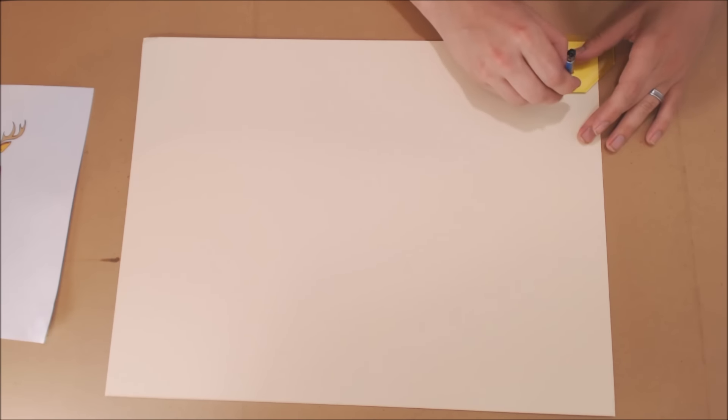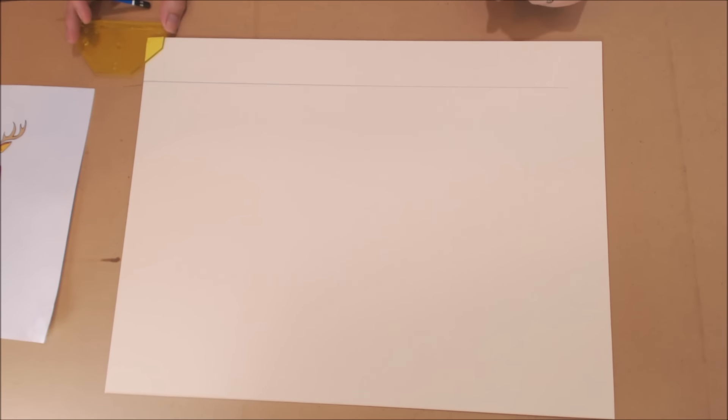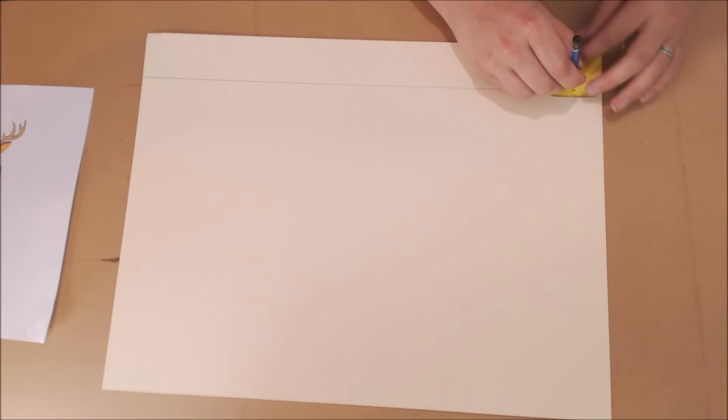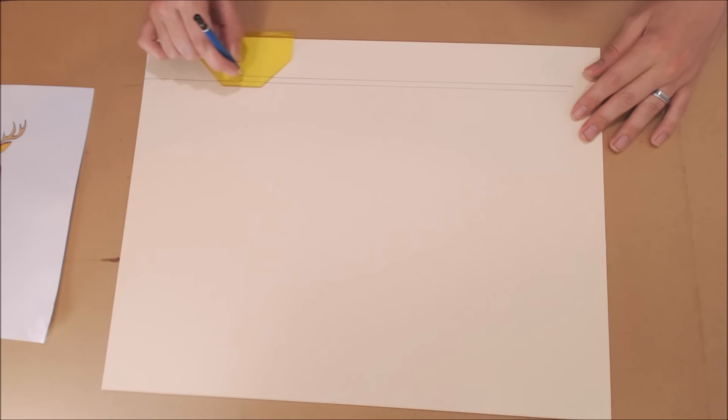I'm going to put my pencil in hole A and pulling upward and sliding slightly to the right I'm going to move my pencil to the right. What this is going to do is create one of the lines for my mat board. Then I'll go all the way back to the left, set it in the second hole which would be hole B and again slide all the way to the right.